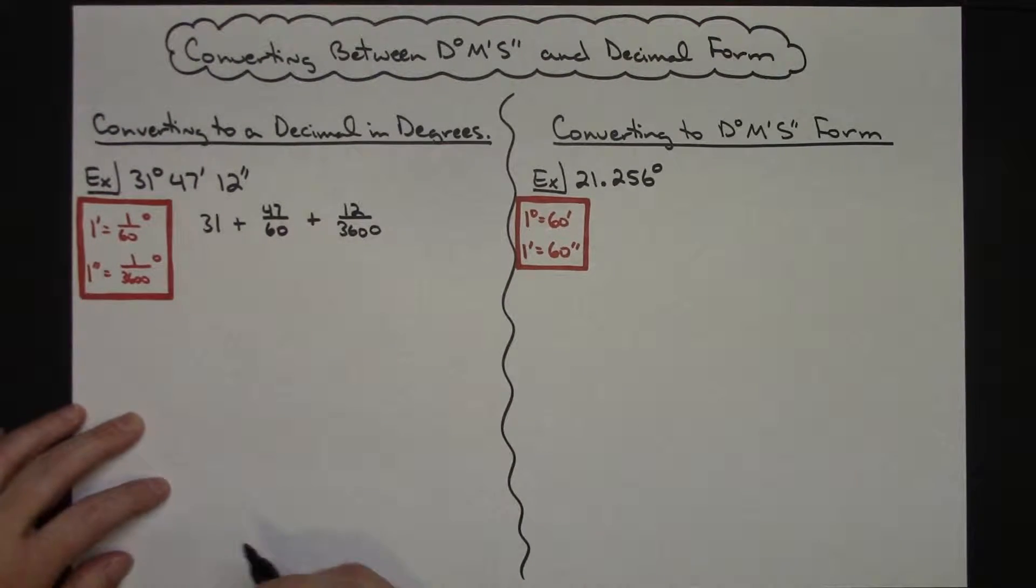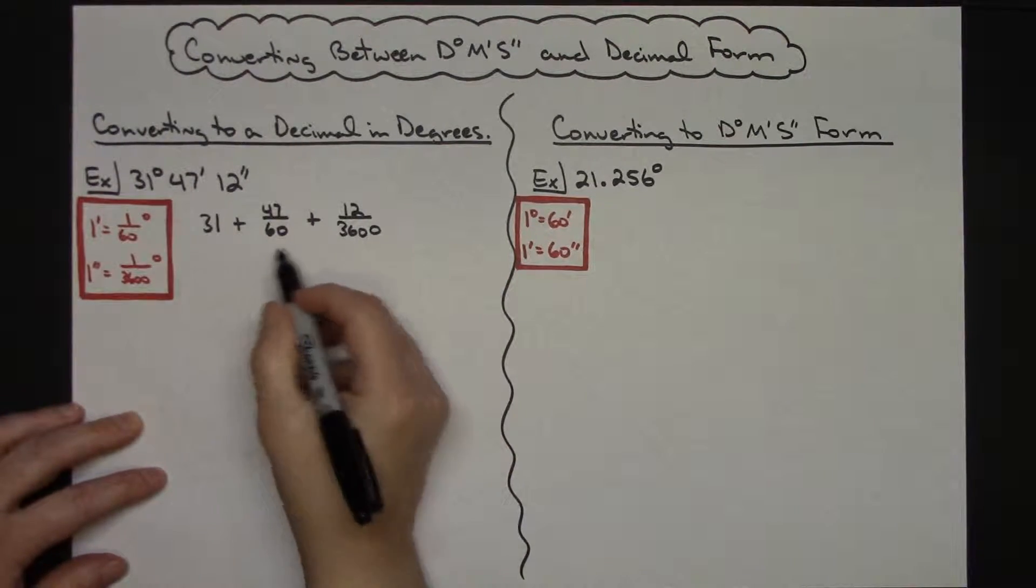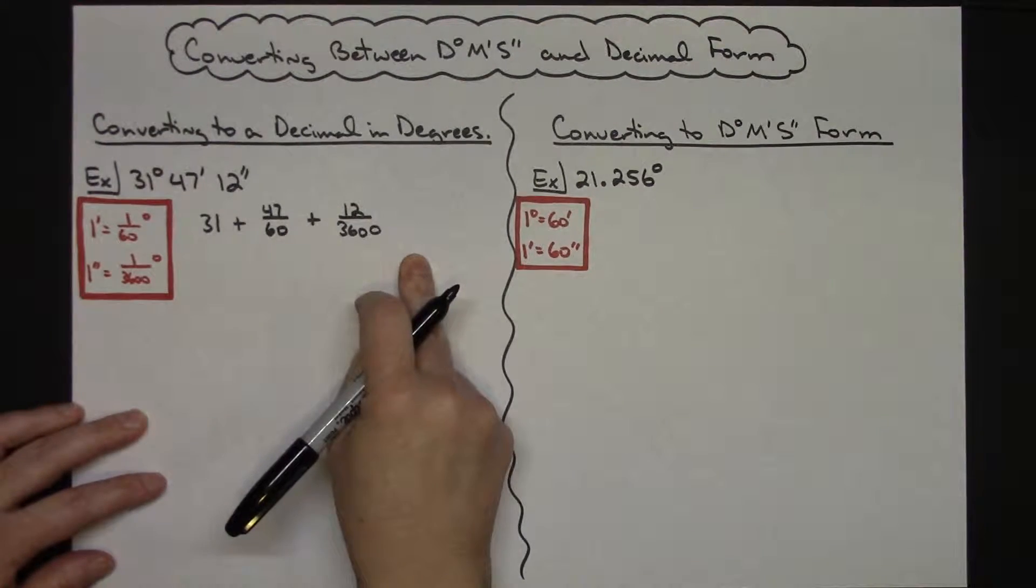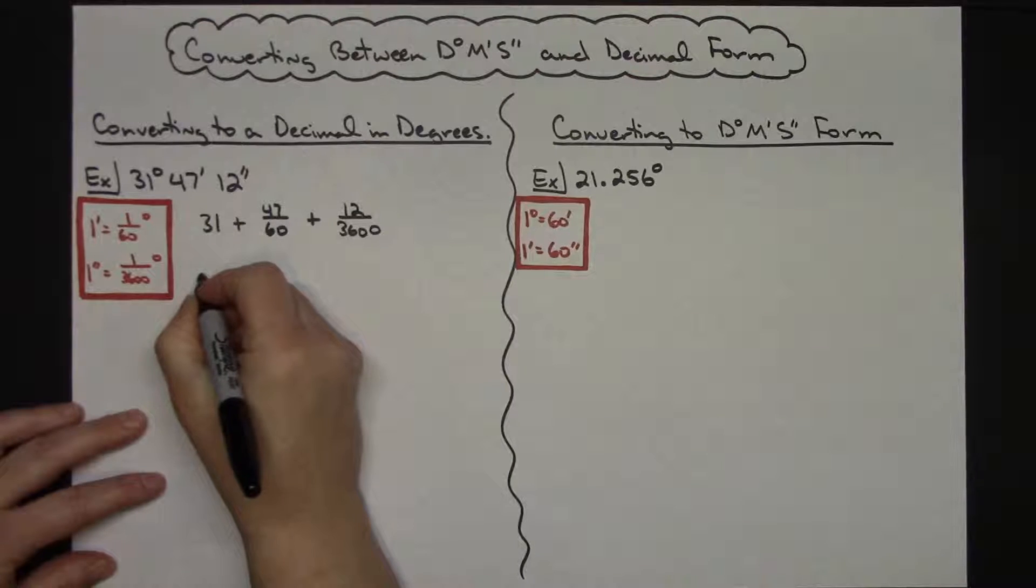Okay, so those are your two initial things. At this point I would probably grab a calculator. You could do this all in one fell swoop left to right across on your calculator.